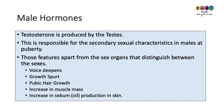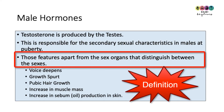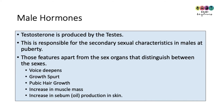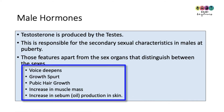It's important that you pay attention to the hormones, particularly the male hormones which are often overlooked. Testosterone is produced by the testes and is responsible for the secondary sexual characteristics in males at puberty. These are defined as those features apart from the sex organs that distinguish between the sexes — examples include the voice deepening, a growth spurt, pubic hair growth, an increase in muscle mass, and increased production of sebum in the skin.